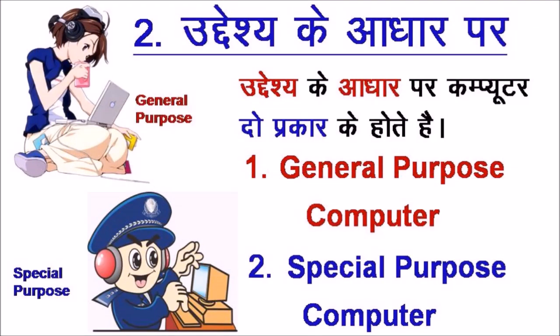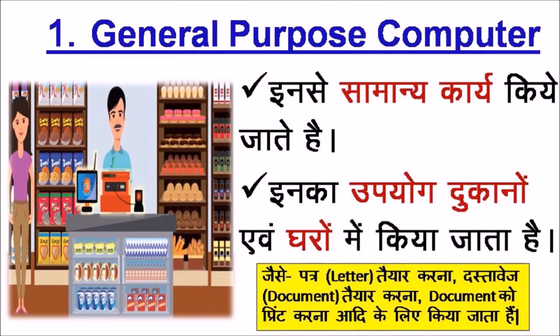दूसरा है उद्देश्य के आधार पर — Computer दो प्रकार के होते हैं। पहला है General Purpose Computer और दूसरा है Special Purpose Computer। General Purpose Computer से सामान्य कार्य किये जाते हैं। इनका उपयोग दुकानों या घरों में किया जाता है, जैसे पत्र तैयार करना, दस्तावेज तैयार करना, Document को Print करना आदि के लिए इसका प्रयोग किया जाता है।